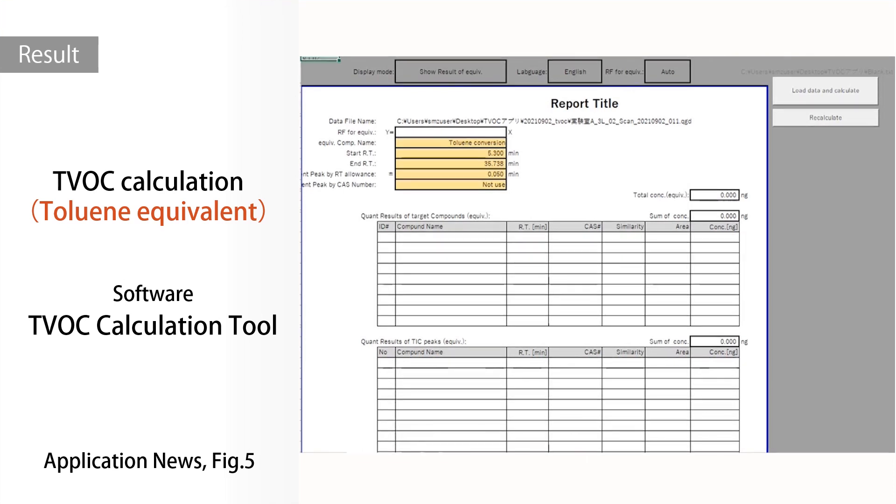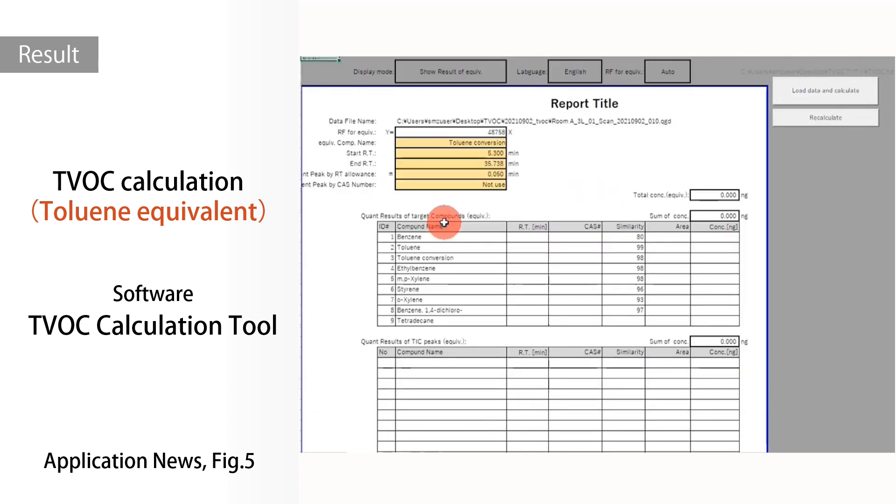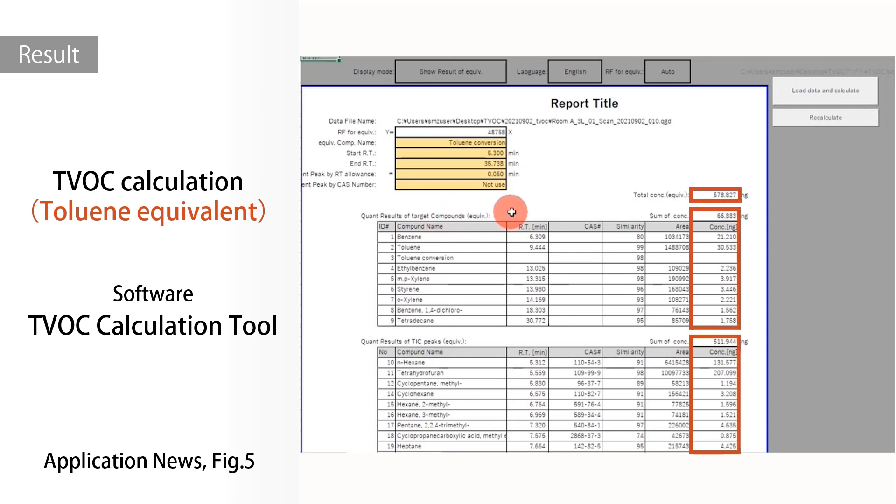The CSV file was then loaded onto TVOC calculation tool. The conversion of TVOC data to toluene-equivalent concentration was automatically performed by the tool.